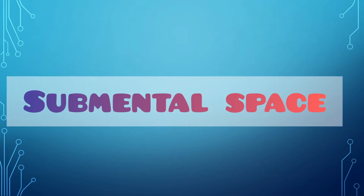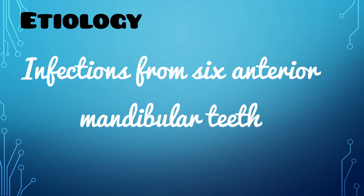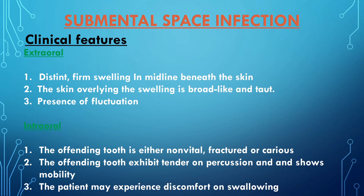First we will go through the submental space. The etiology of the submental space infection is most frequently involved by infections originating from the six anterior mandibular teeth. The extraoral findings include distinct firm swelling in the midline beneath the skin; the skin overlying the swelling is board-like and taut, and fluctuation may also be present. The intraoral findings include the offending teeth are either non-vital, fractured, or carious; they also exhibit tenderness on percussion and show mobility. The patient may experience discomfort on swallowing.